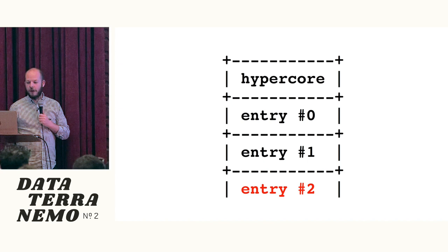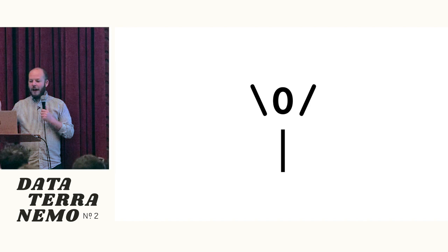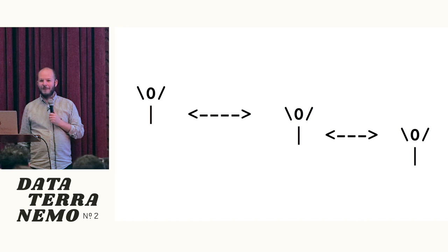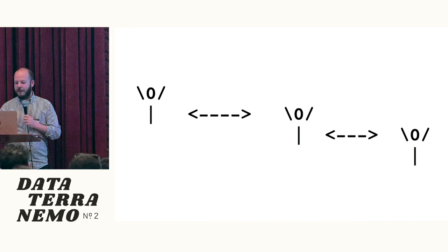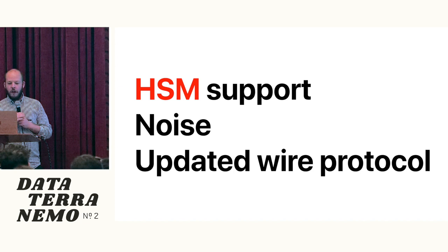HyperCore is a distributed version of that append-only log, which basically means that if you have a HyperCore, you can very easily send it to somebody else, and they can send it to somebody else, peer-to-peer. That's the level of our stack, which most people in here probably already know about.